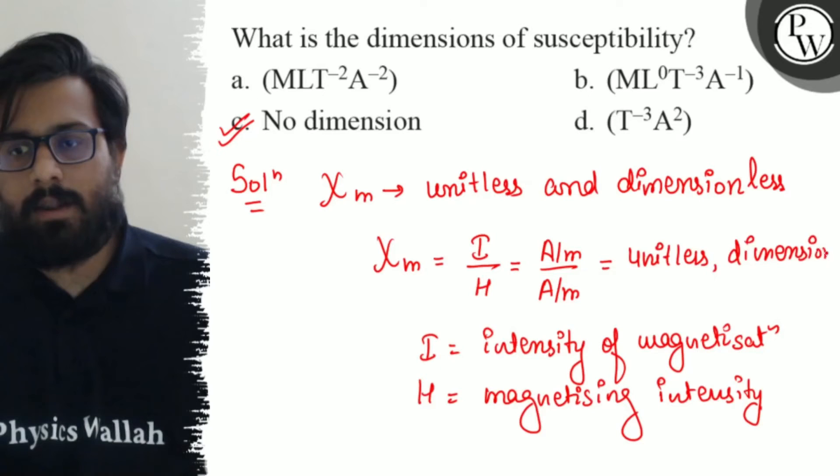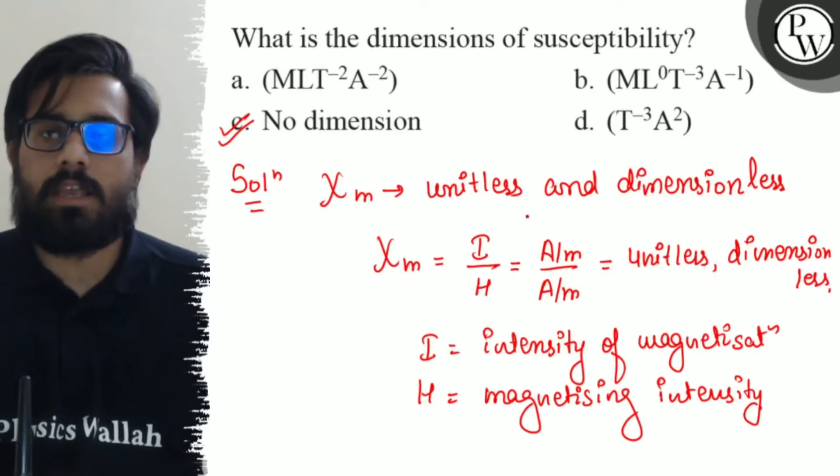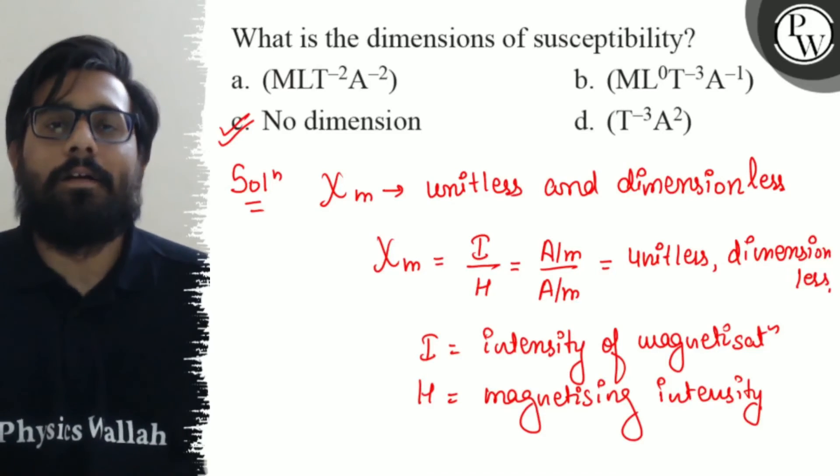So here, the susceptibility is unitless and dimensionless, so of course C option will be correct. I hope you got the concept of this portion. All the very best. Thank you!